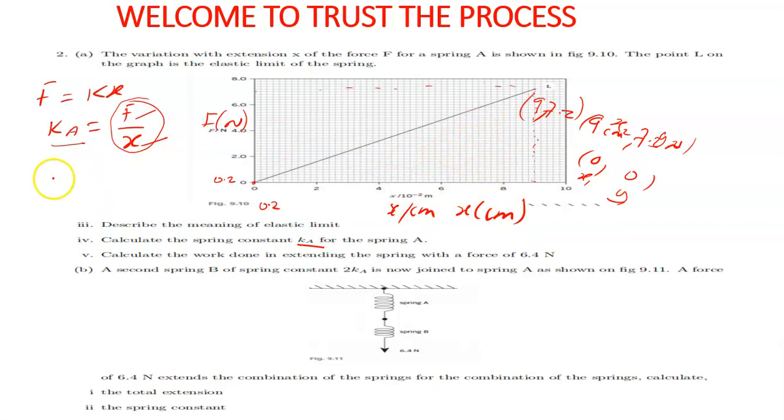We know that gradient, since we're saying the spring constant is nothing but a gradient, so Ka will just be equal to y2 minus y1 over x2 minus x1, which is y2 is going to be 7.2 minus 0 over, this can be converted into meters. 9 centimeters into meters, it's nothing but 9 times 10 to the negative 2 meters minus 0. So eventually, you're going to say Ka is nothing but 7.2 over 9 times 10 to the negative 2. This is in Newtons over meters.